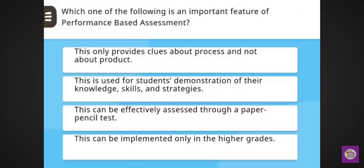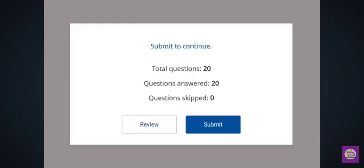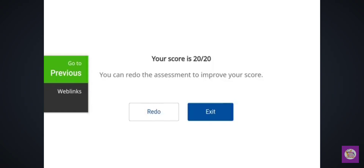Next question: Which one of the following is an important feature of performance-based assessment? Correct answer: this is used for students' demonstration of their knowledge, skill and strategies. In this way we have done all 20 questions, and our score is 20 out of 20. Now we will solve the next set.